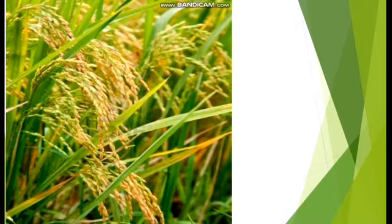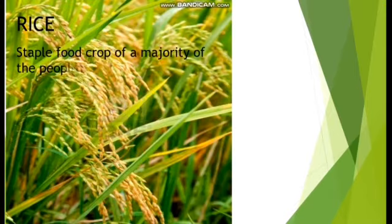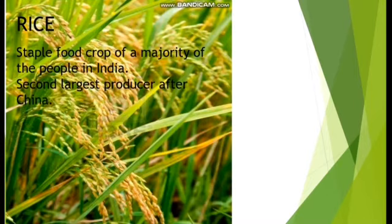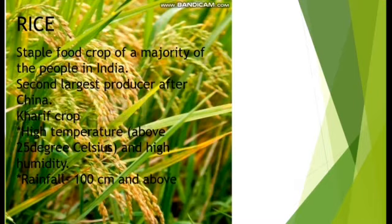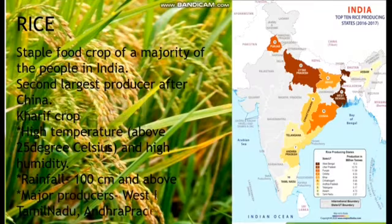Rice is the staple food crop of a majority of the people in India. India is the second largest producer of rice after China. It is a Kharif crop. It requires high temperature above 25 degrees Celsius, high humidity, and rainfall of 100 centimeters and above.